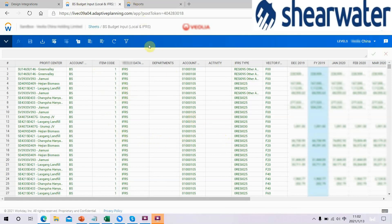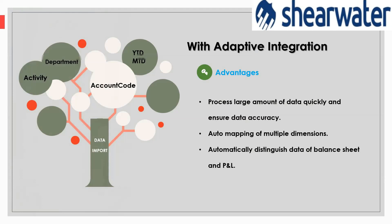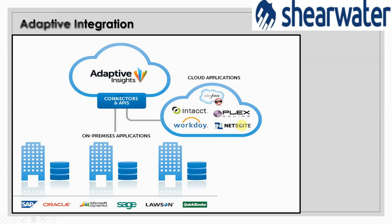Of course, we have real-time reports to see the imported data more clearly. That is the whole process for the integration data imports. With integration, we can process large amounts of data quickly and ensure data accuracy. Auto-mapping of multiple dimensions automatically distinguishes data between Balance Sheet and PL. Integration in Adaptive is a method in which data is loaded from one data source to another — it is really a powerful tool.